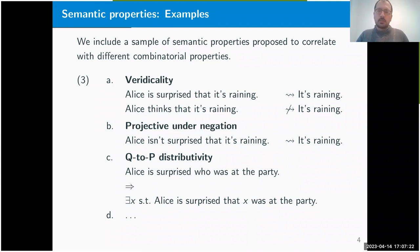One can ask about projection from under the scope of negation. So 'Alice isn't surprised that it's raining' also implies that it's raining. One property that will become important later in the talk is the property of being Q2P, or question-to-proposition distributive. This is the property that if you have a sentence like 'Alice is surprised who was at the party' with a question complement, the sentence entails there is an individual X such that Alice is surprised that X was at the party—in a sense, replacing the question complement with a weaker declarative one.